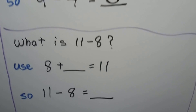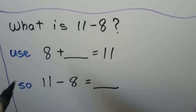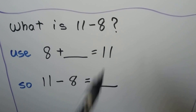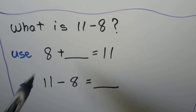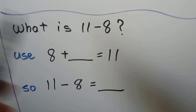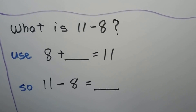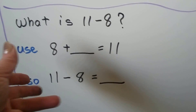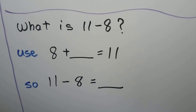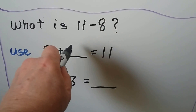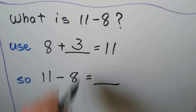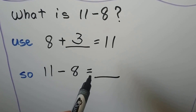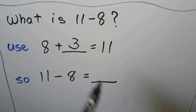What is 11 minus 8? We can use 8 plus some number is equal to 11. We can start at 8 and count on to 11: 8, 9, 10, 11. That's 3. So 8 plus 3 is equal to 11, and 11 minus 8 is equal to 3.